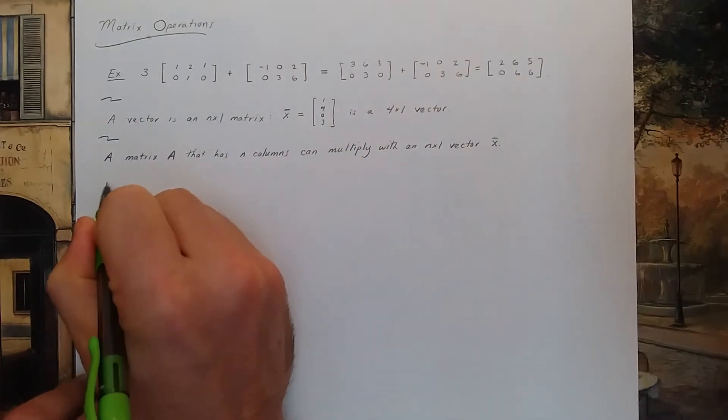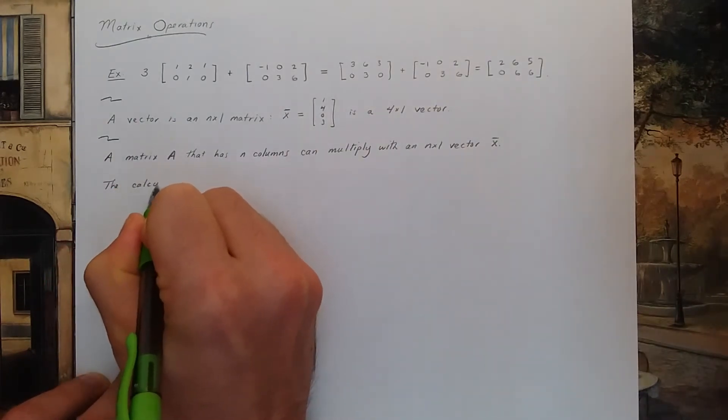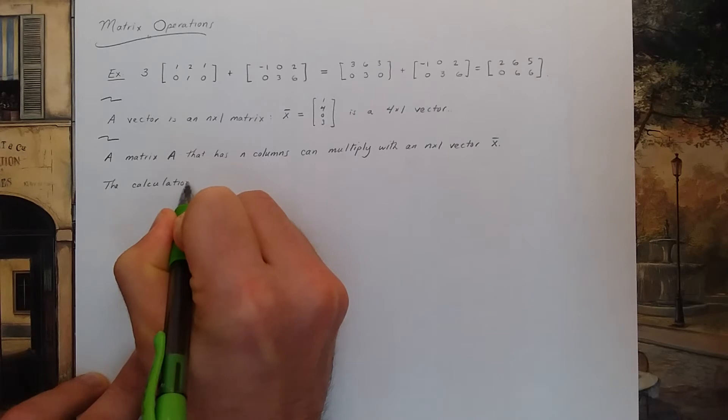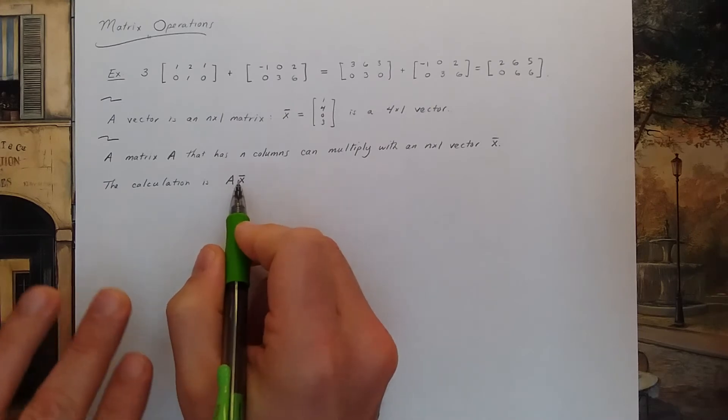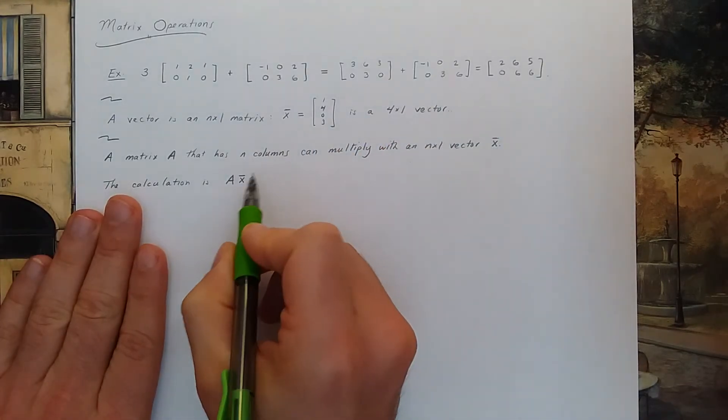What is the calculation? The calculation is A times x. So we write the matrix A on the left side and x on the right side.